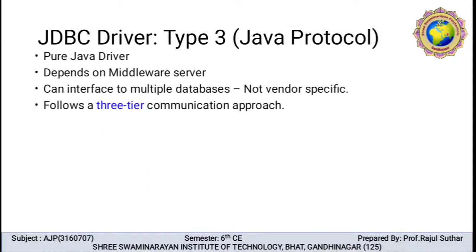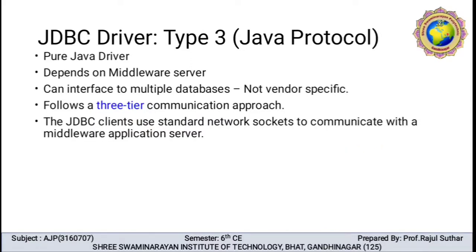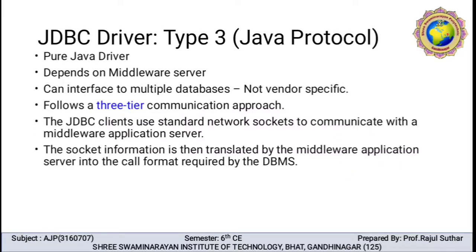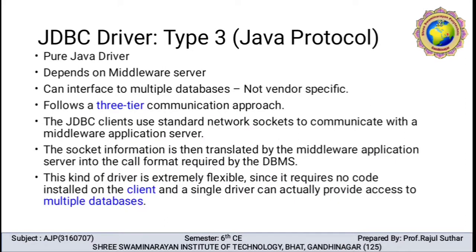It follows the 3-tier communication approach, which we already covered in client-server communication. This 3-tier communication approach is used in type 3. For example, a JDBC client uses a standard network socket to communicate with a middleware application server. The socket information is then translated by the middleware application server into the call format required by the DBMS. This kind of driver is extremely flexible since it requires no code installation on the client, and a single driver can actually provide access to multiple databases.